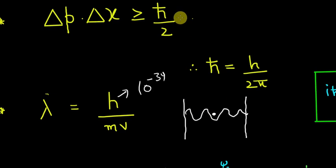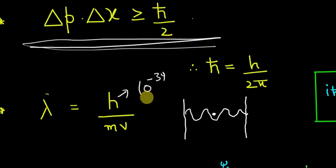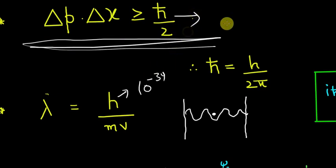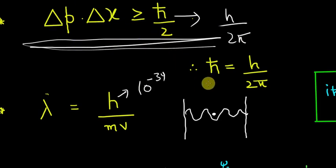Also, the objects around you are really massive, so you can simply apply Newton's law and predict things about them easily. But at quantum dimensions, the Heisenberg uncertainty principle becomes really important. It tells us that the uncertainty in momentum times the uncertainty in position must be greater than or equal to ℏ/2, where ℏ is h divided by 2π. This principle is negligible at everyday scales but critical in quantum mechanics.